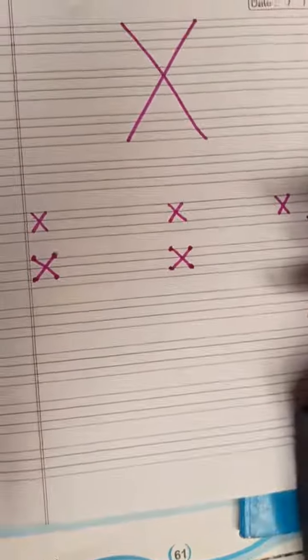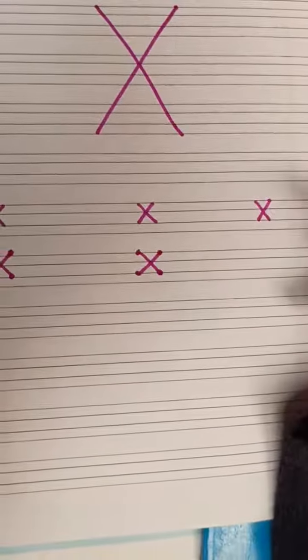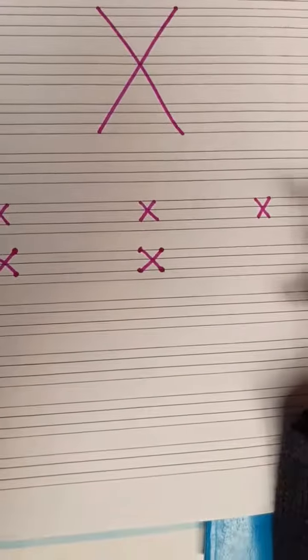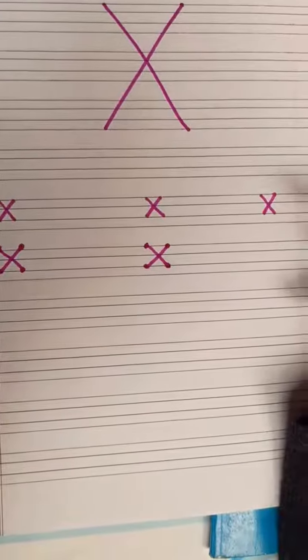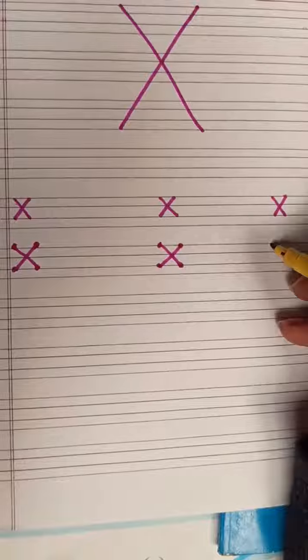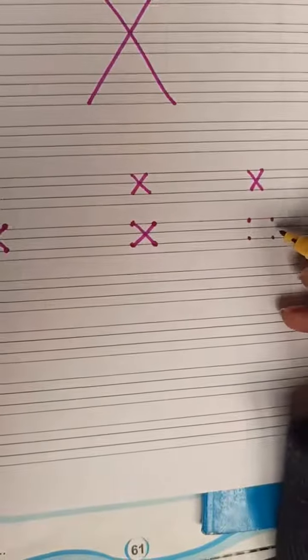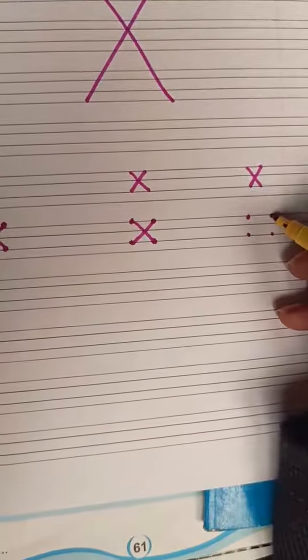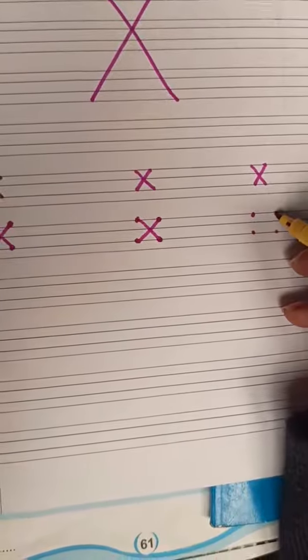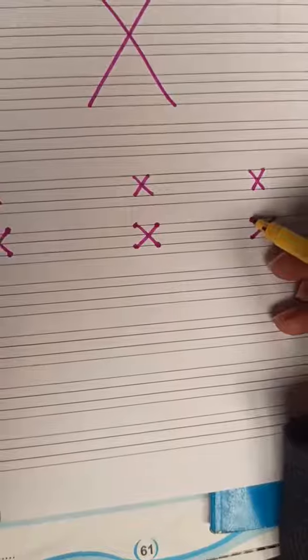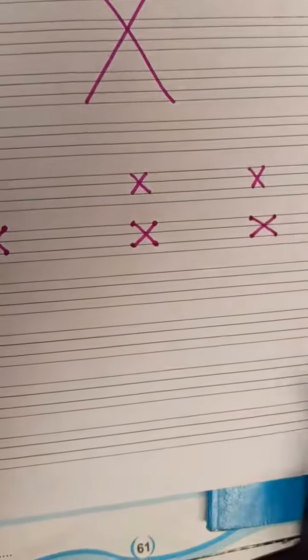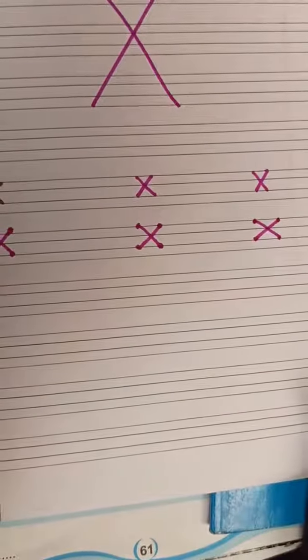X for x-ray. X for Christmas tree. X for xylophone. See now. 1 dot, 2 dot, 3 dot, 4 dot. And then, we will join like this. We have to join this in a crossing way. Slanting. Slanting. So, our X for Christmas tree is ready.